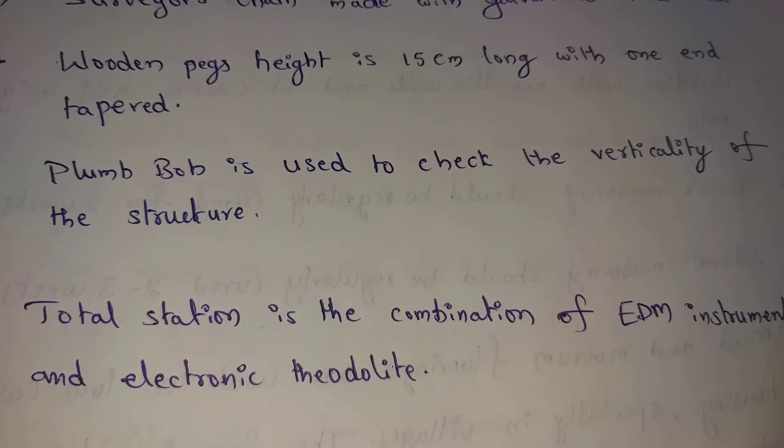Total station is the combination of EDM instrument and electronic theodolite. Nowadays totalization is a common instrument type because length, heights, areas, cross-sections, totalization use and find out. EDM is Electronic Distance Measurements Unit and electronic theodolite. This unit is combined in totalization. Totalization cost is a little heavier, $20,000, $50,000, $100,000. This totalization is a common instrument of features.